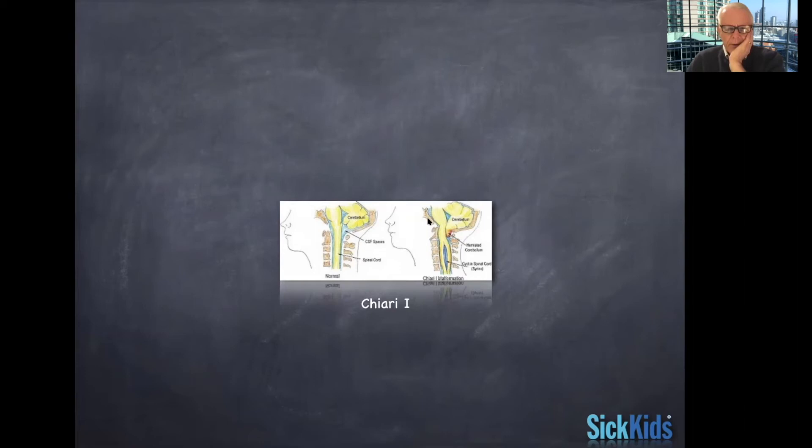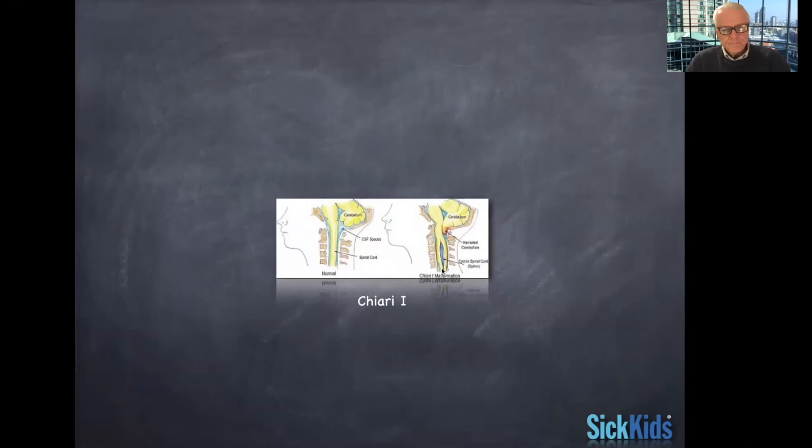And then with the Chiari 1 malformation, you can see the cerebellar tonsils that are herniating through. The crowding at the foramen magnum level and the generation of backup of the cerebrospinal fluid into the spinal cord. And that's called a syrinx and hence gives the name of the condition, which is syringomyelia.